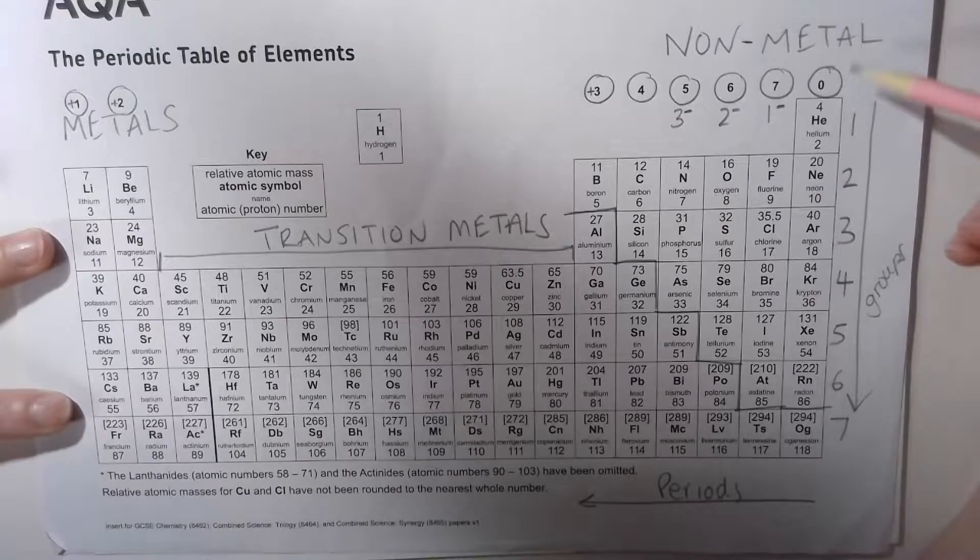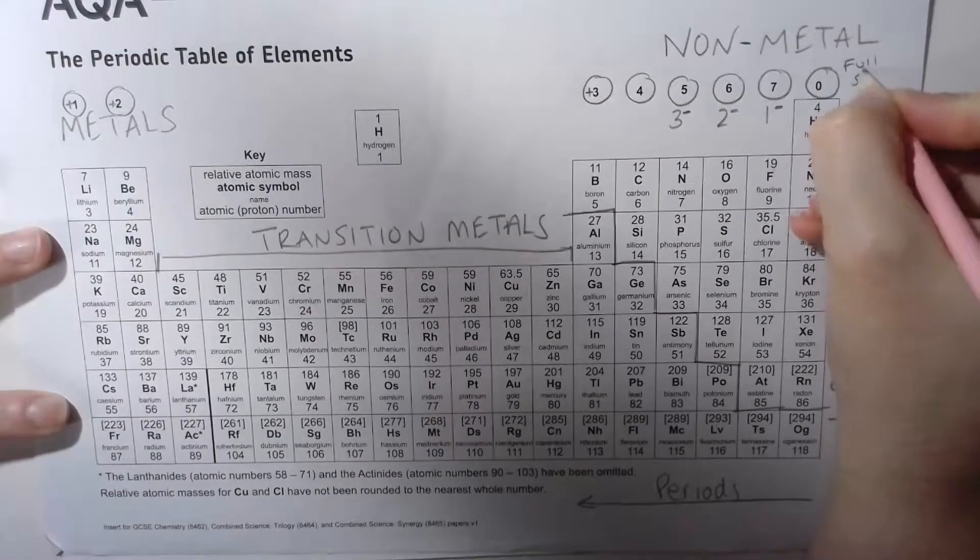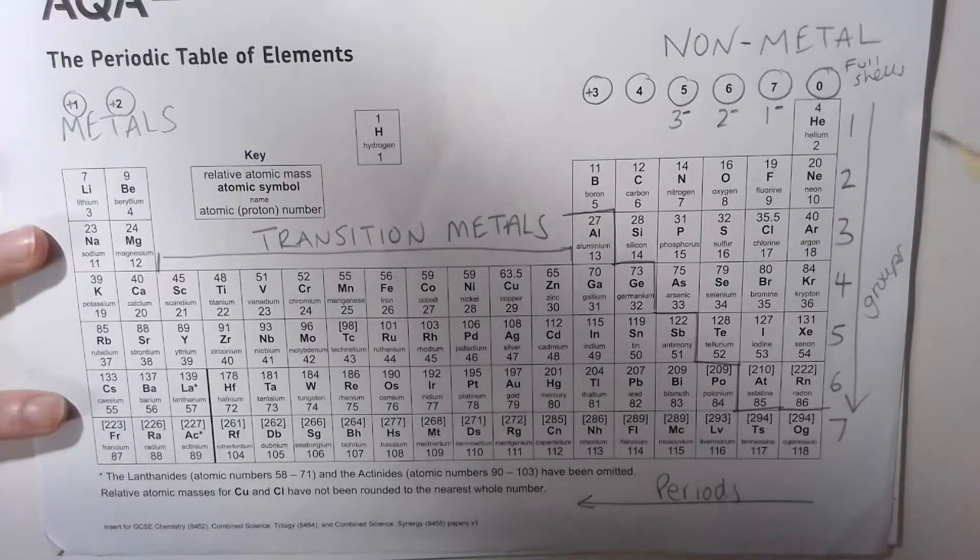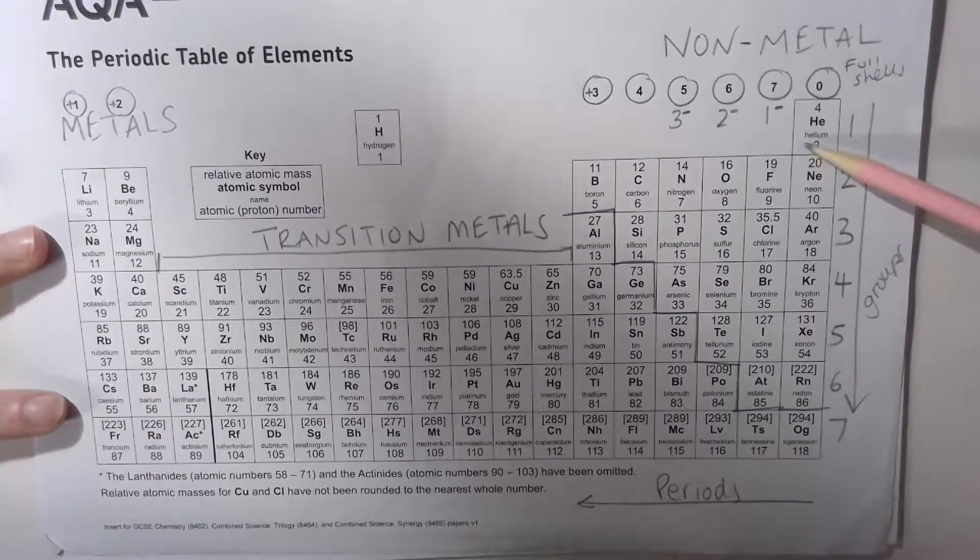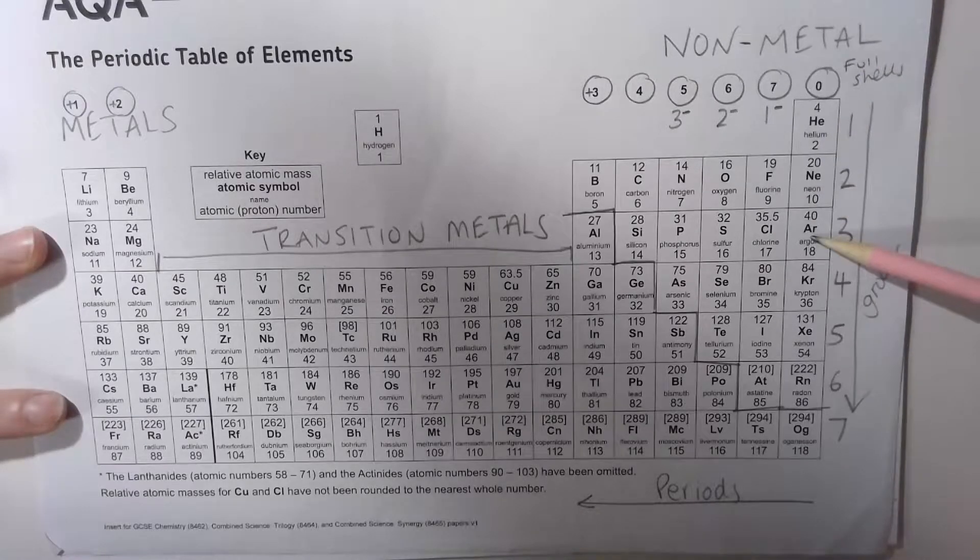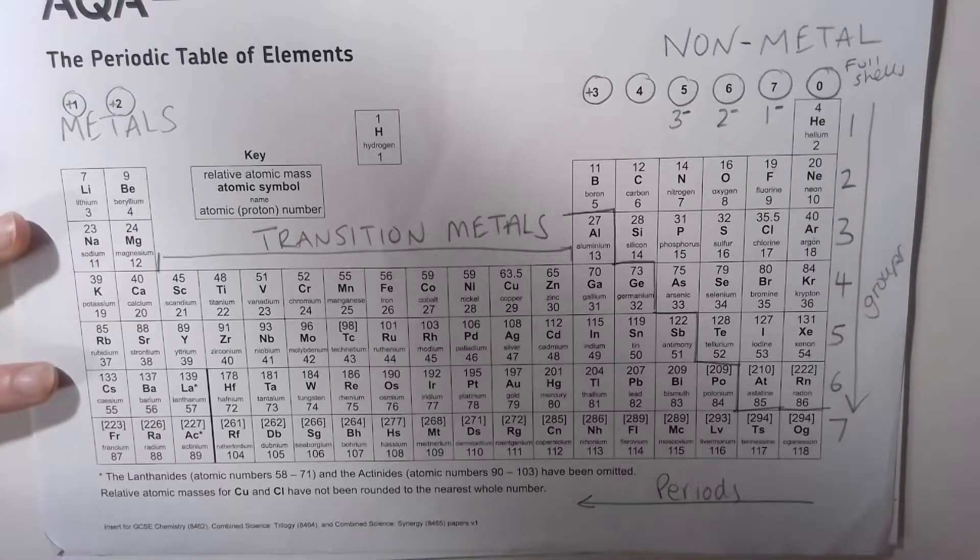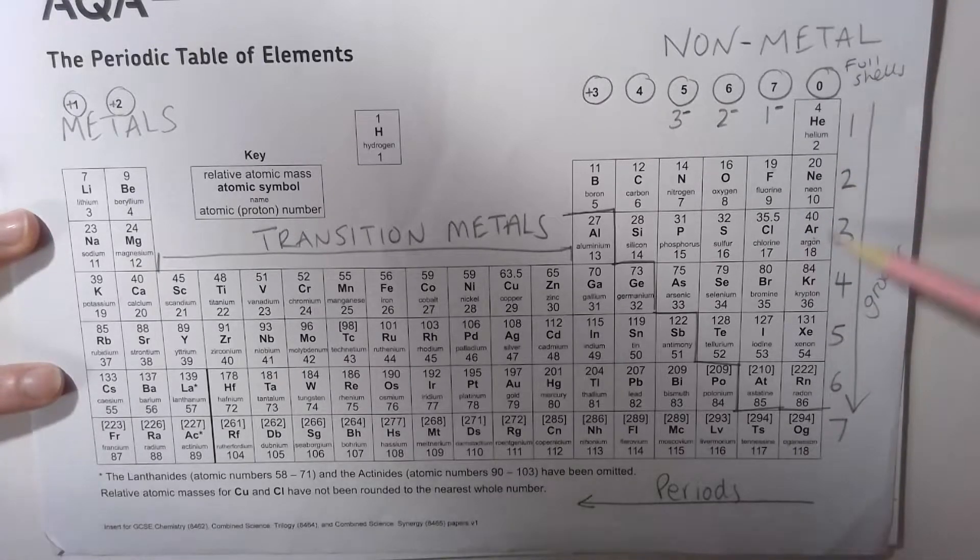This means they have totally full shells. Every single electron they have is on a full shell, so it's either 2, 2-8, 2-8-8, etc. The main groups you need to know about are group zero, the noble gases or inert gases that aren't reactive.